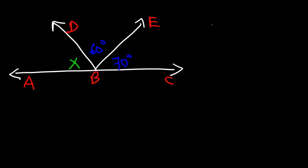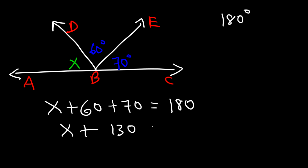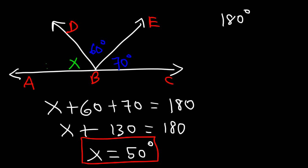Whenever you have a straight angle, the sum is 180 degrees, so these three angles have to add up to 180. We write the equation: X plus 60 plus 70 equals 180. Since 60 plus 70 is 130, we subtract 130 from both sides: 180 minus 130 is 50. So X equals 50, which is the measure of angle ABD.